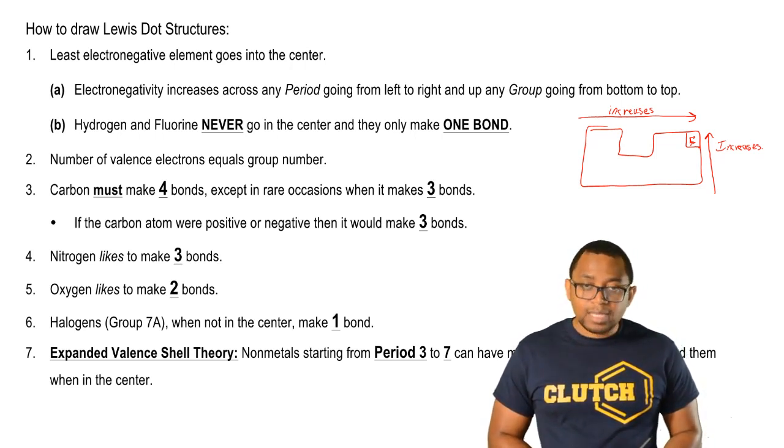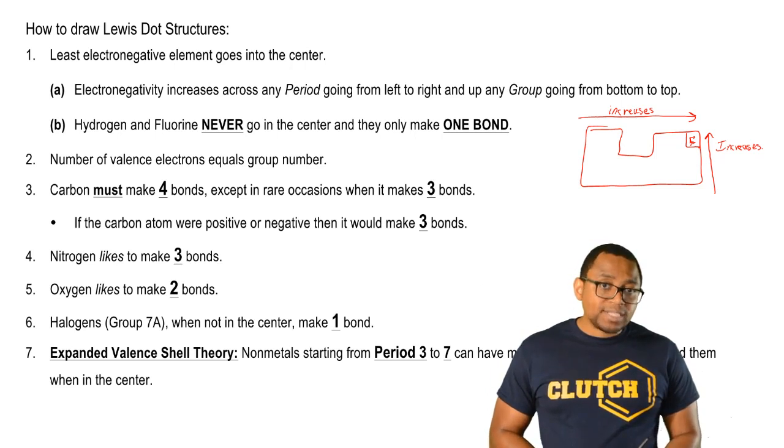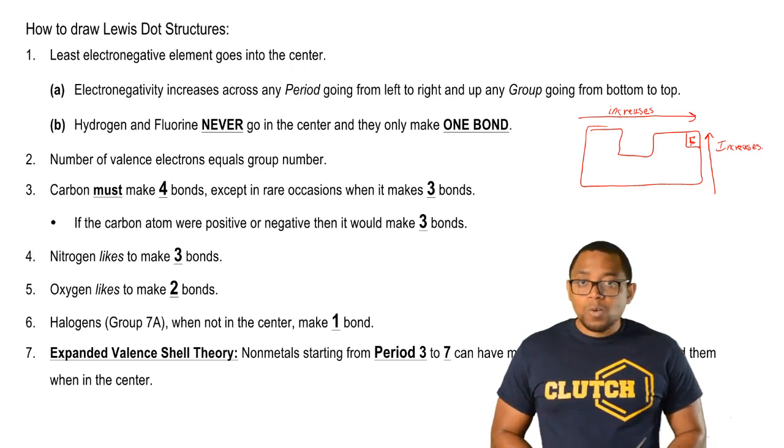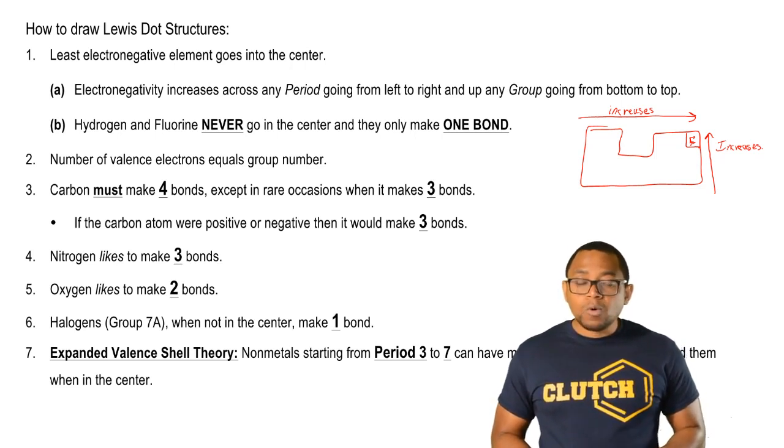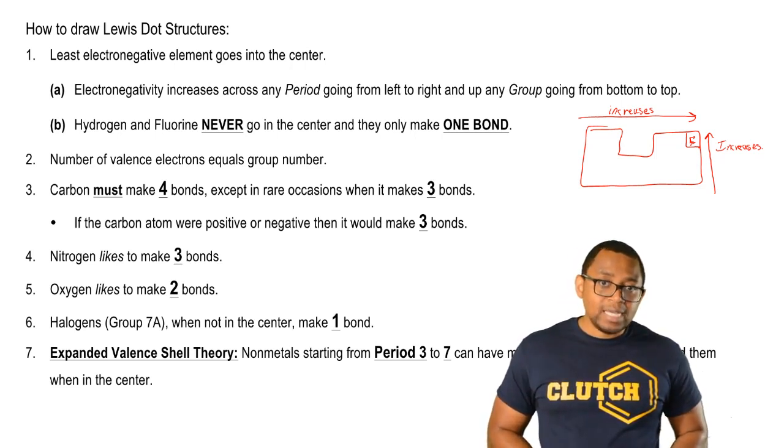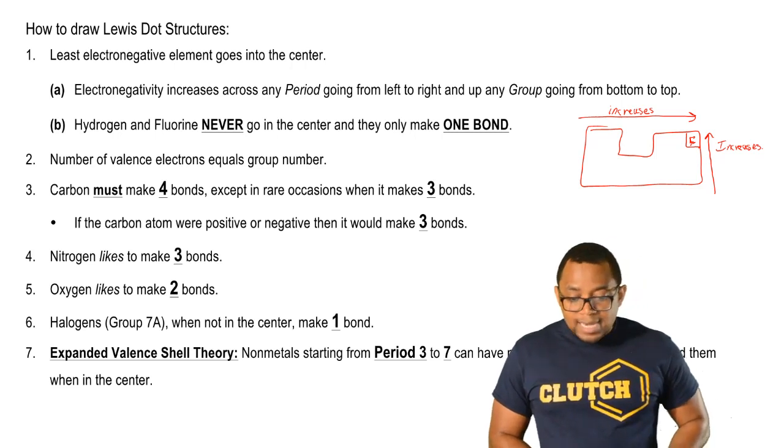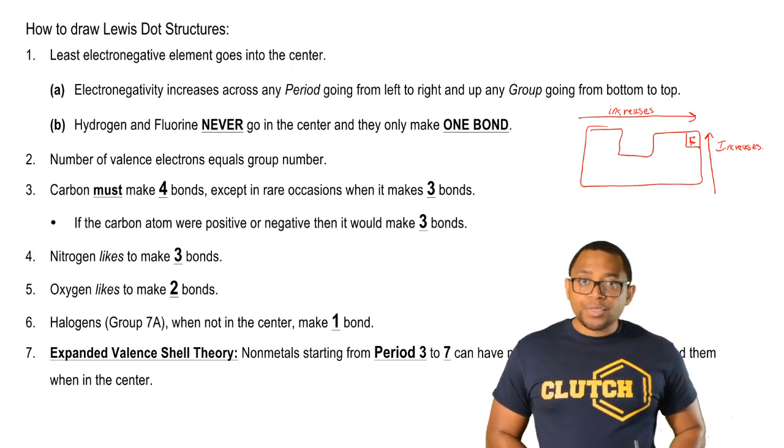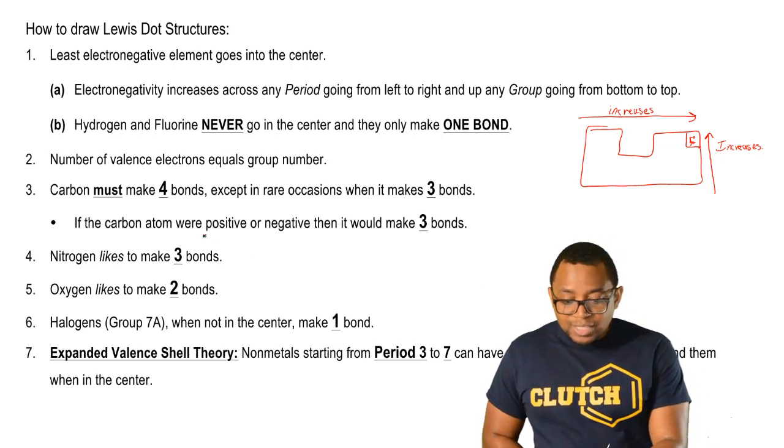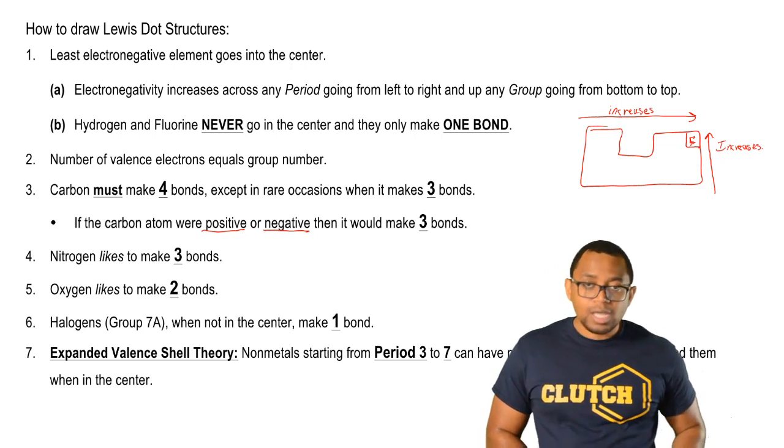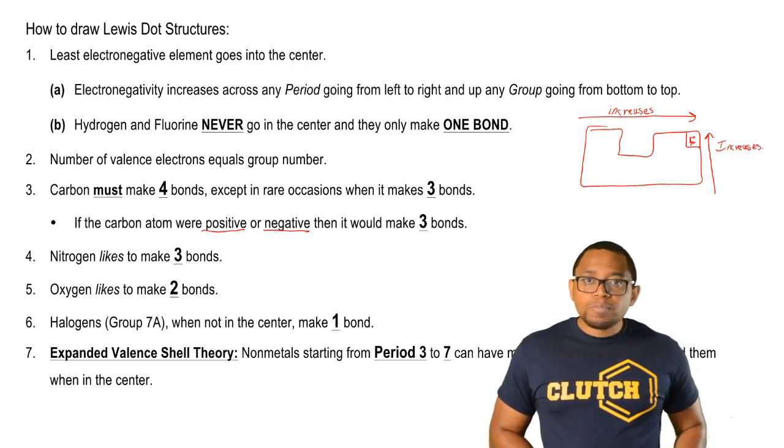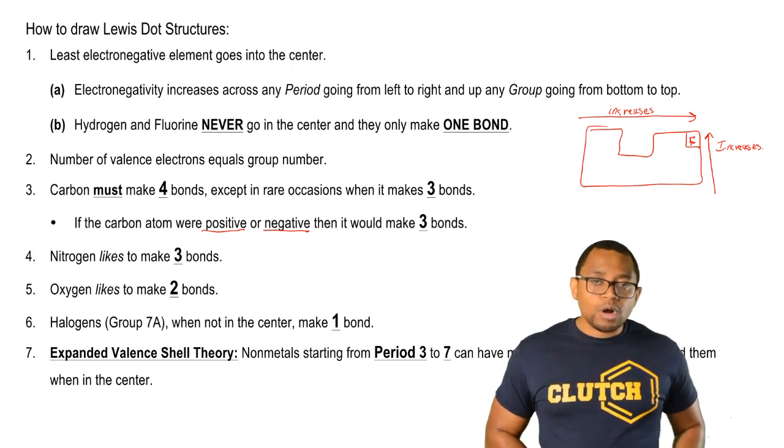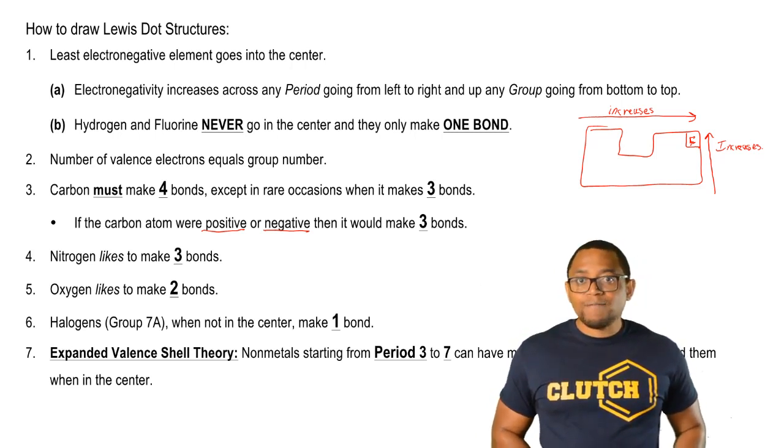Now carbon must make four bonds. That's because it's four spaces away from being a noble gas whichever direction you go. Whether it loses four electrons to become just like helium or gains four electrons to become like neon, four is its magic number. Now there are rare occasions where it's going to make three. In those rare occasions, that's when carbon itself has a charge. It's either positively charged or negatively charged. We usually don't see too many examples of that, so for the most part, we'll be seeing compounds with a neutral carbon and therefore, it has to make four bonds.